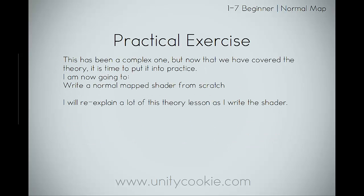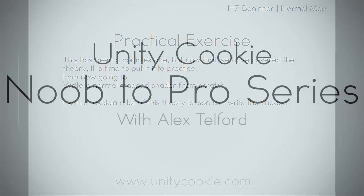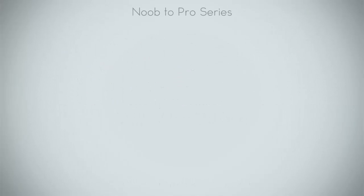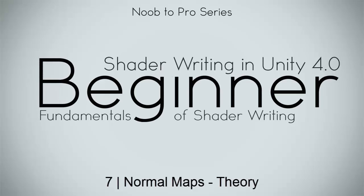Now it's time for the practical exercise. We've covered the theory, so now we'll put it into practice. Rather than writing a normal map shader from scratch, we're going to take our previous shader and add normal mapping to it. I've decided we'll just append to our existing shader rather than rewriting the entire lighting model every time. I will be re-explaining a lot of this theory lesson as I write the shader, so don't worry if none of this made sense — hopefully it will soon.